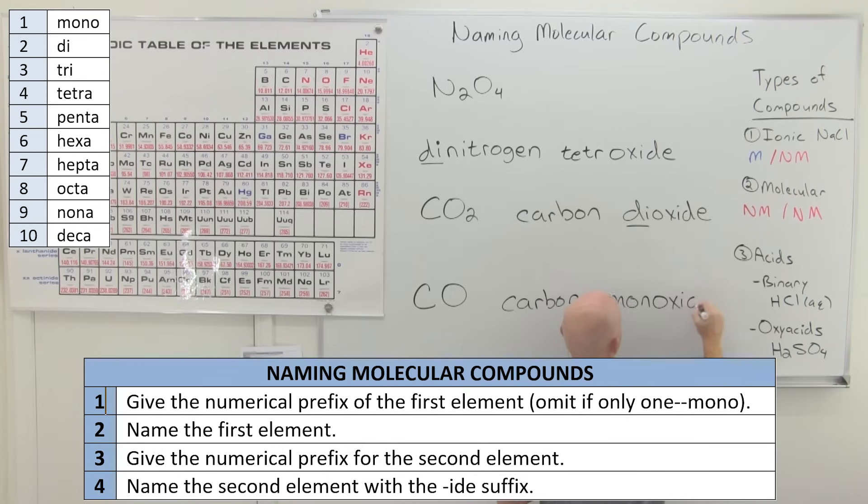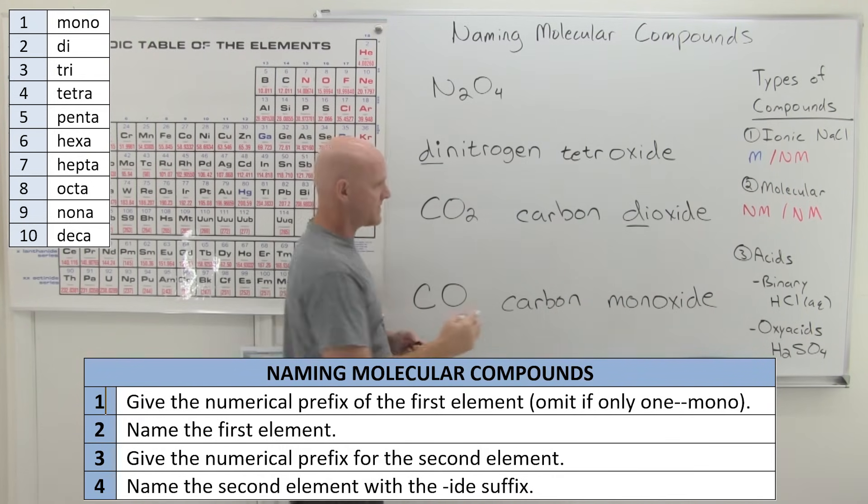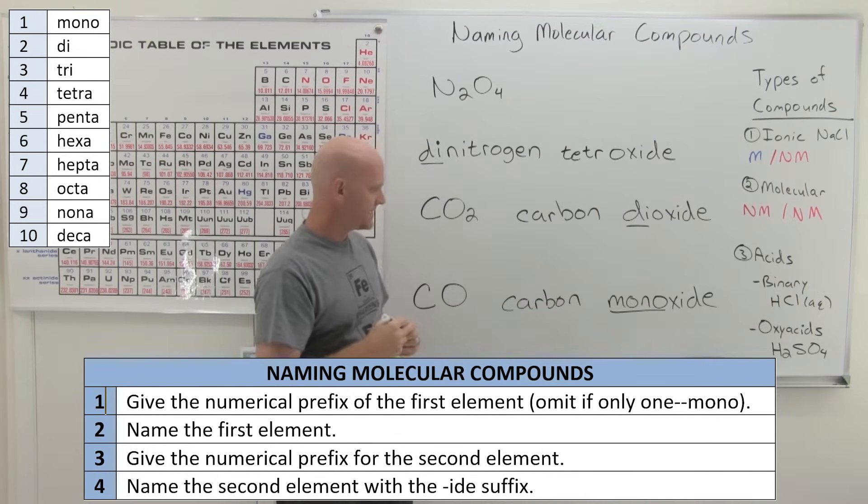And so instead of saying monoxide, we're going to drop one of those O's to avoid that double O sound. Monoxide, we're just going to say monoxide. And many of you probably already knew that the name of this was carbon monoxide. And so we still used that lovely prefix there.